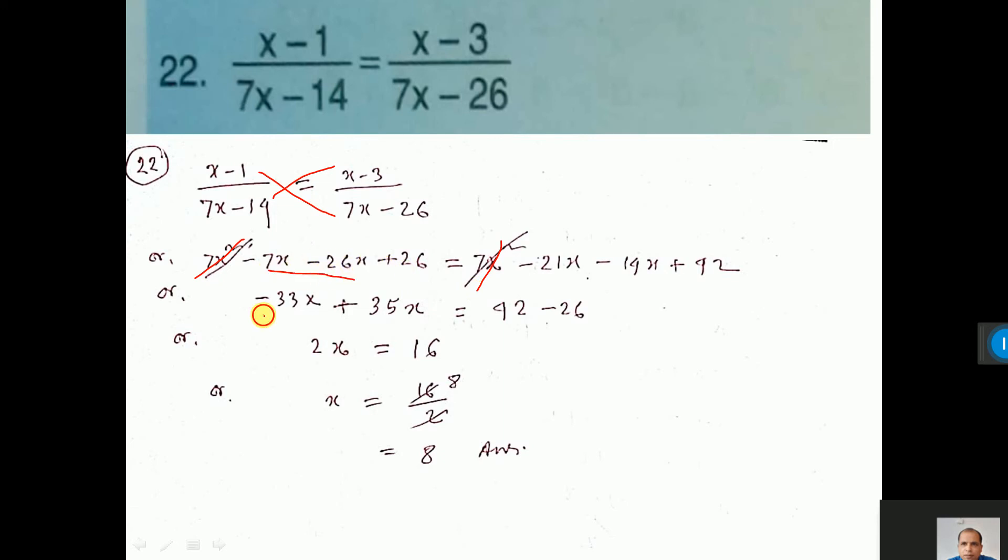Now here, these two add, giving here. Then these two add. 35x after coming this side, it will be plus. 42 here and 26 after going that side will be minus. After doing minus, you are getting this. And here, this minus this means this. So 2 will go that side as division, cut-a-cut, you will get 8.